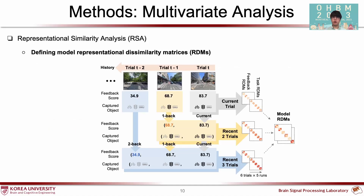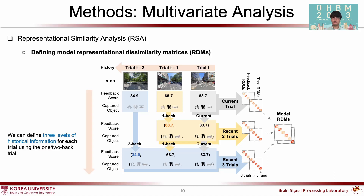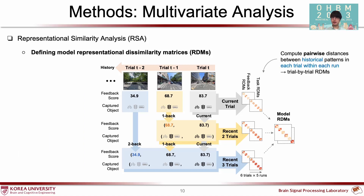We used RSA for our main analysis. Defining model RDMs is an important step in RSA, and we tried to include historical information in model RDMs to test our hypothesis. For each trial, there were feedback scores and object detection data. We defined three levels of historical information: the current trial model containing only the current trial, the recent two trials model grouping current and one-back trials, and the recent three trials model including current, one-back, and two-back.